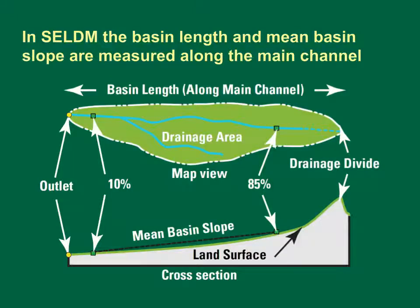The basin length and mean basin slope are measured along the main channel. This is a schematic diagram of a basin with a map view and a cross section showing the main channel length and the mean basin slope. In SELDOM, these same basin properties are used to define the characteristics of the highway site and the upstream basin. The basin length, also known as the main channel length, is the total distance in miles from the point of interest to the highest point on the basin boundary following the main channel route. The basin length may be much longer than the straight-line length between the point of interest and the selected point on the basin divide if the channel is sinuous.